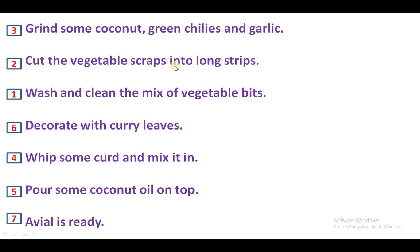Cut the vegetable scraps into long strips. Grind some coconut, green chilies and garlic. Fourth, whip some curd and mix it in. Fifth, pour some coconut oil on top. Sixth, decorate with curry leaves. Seventh, avial is ready.